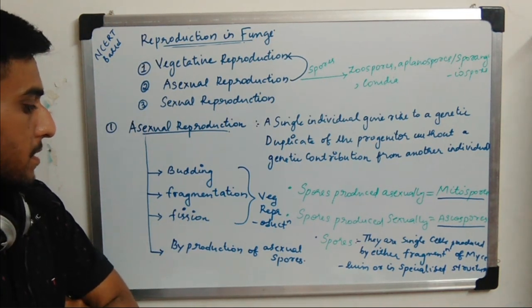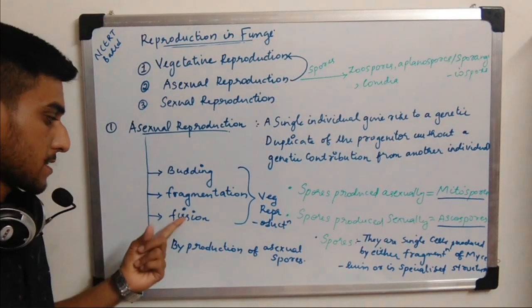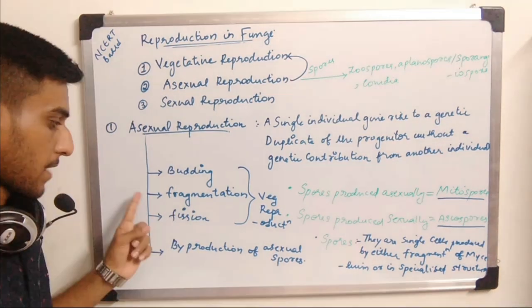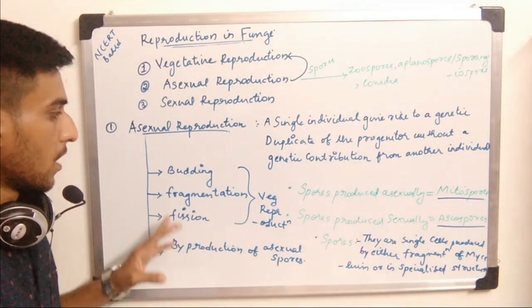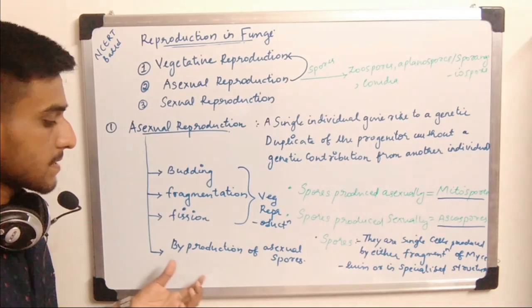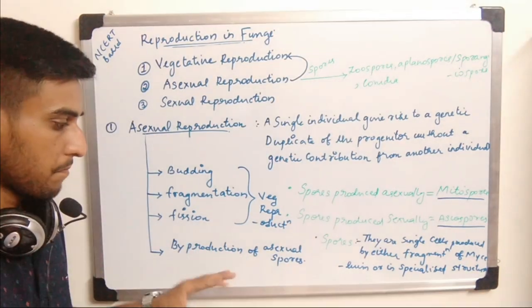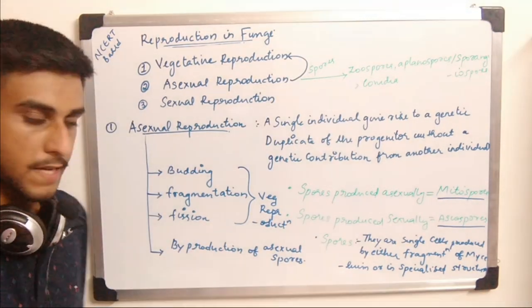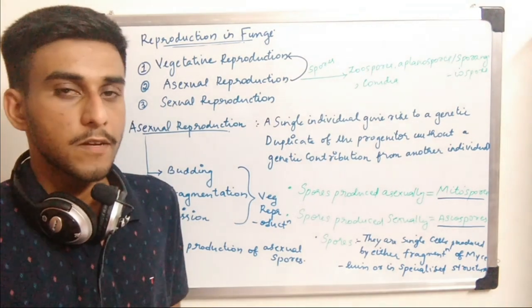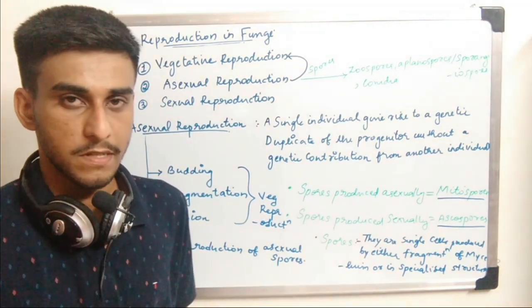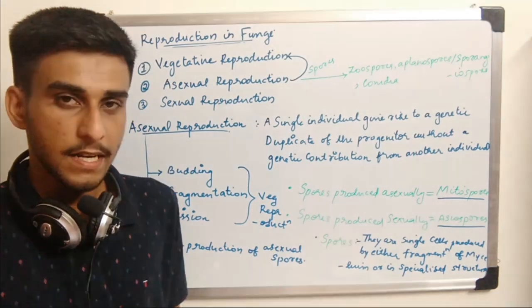In vegetative reproduction there are three main methods: budding, fragmentation, and fission. The true asexual reproduction in fungi is by the production of asexual spores. Fungi produce certain spores which are seen everywhere.